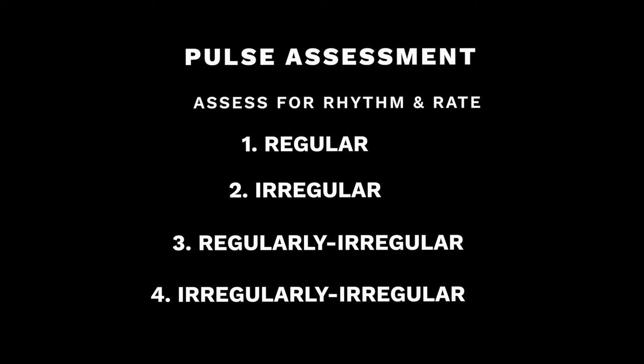When we assess a pulse, we assess for rhythm and rate. Pulses can be described as regular, irregular, regularly irregular, or irregularly irregular. Normally you want to count for one minute. You can count for 30 seconds, but it's best to count for one minute especially when you're first learning about your patient. Once you know the patient has a regular heartbeat, 30 seconds is acceptable. For apical pulses, always listen for one minute.